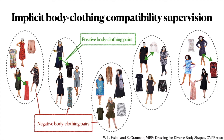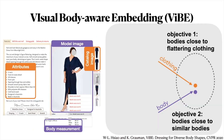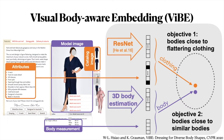Negative body-clothing pairs are formed by bodies and clothing from different clusters. We now introduce VIBE, which captures clothing's affinity with body shapes. The embedding learns to map bodies close to flattering clothing and also bodies close to other similar bodies. The features we use for clothing are the fusion of CNN features from catalog images and one-hot attribute vectors. The features for bodies are the fusion of body measurements and estimated 3D features.